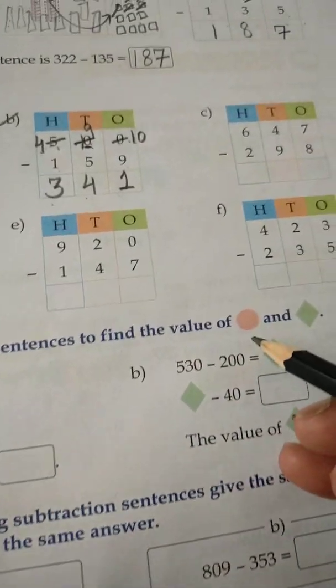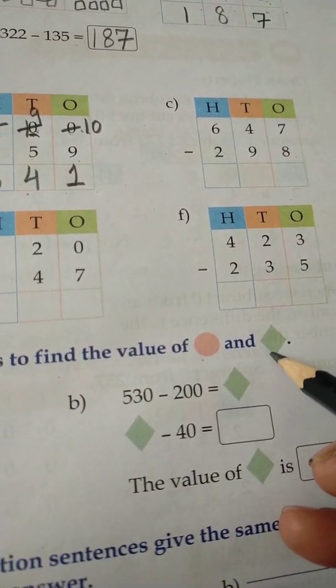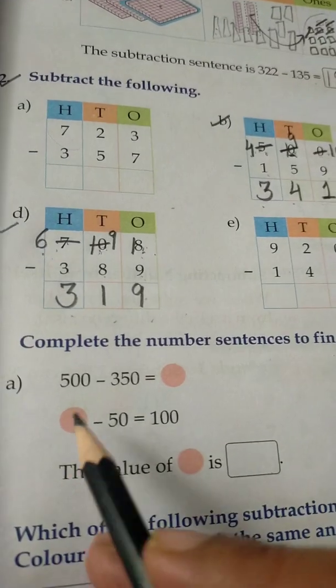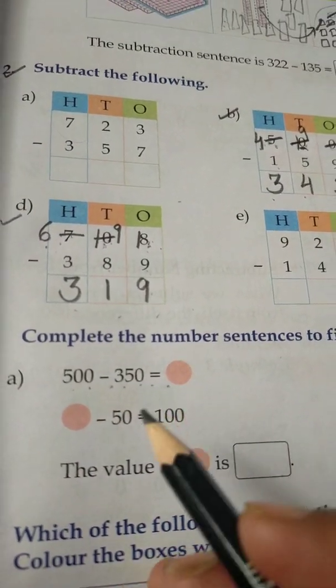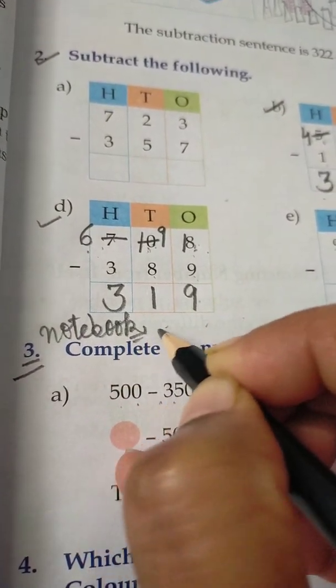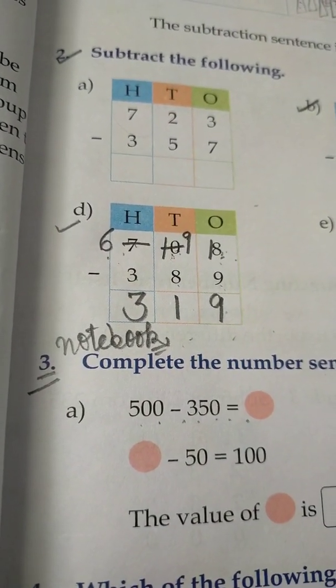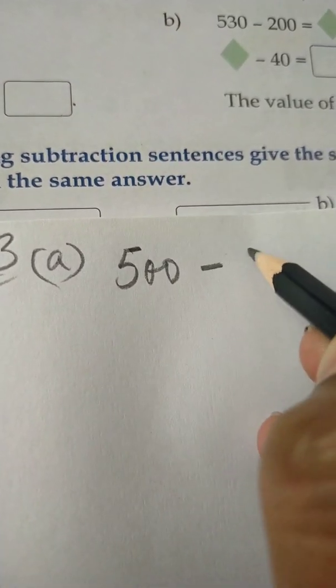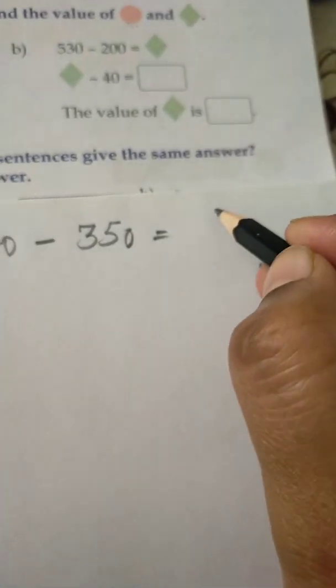Now let's see the third sum: complete the number sentences to find the value of the orange color circle and the green color box. We have to find the value of these. Firstly, 500 minus 350 — students, you will do this sum in your notebook. See how to do this sum. This is third sum, a part: 500 minus 350 equals one circle given.